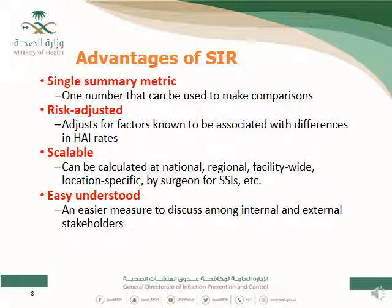SIR is risk-adjusted — it adjusts for factors known to be associated with differences in HAI rates. Instead of stratifying rates by type of ICU, neonate weight, catheter type in oncology units, or surgery type and risk index, you can adjust for all of these in one summary measure. This replaces stratification with a single adjusted summary measure.